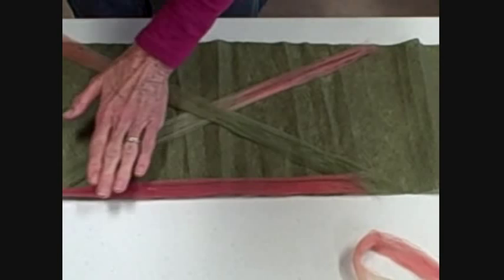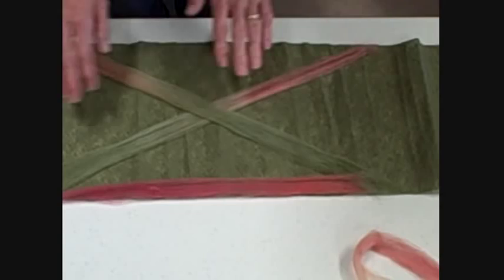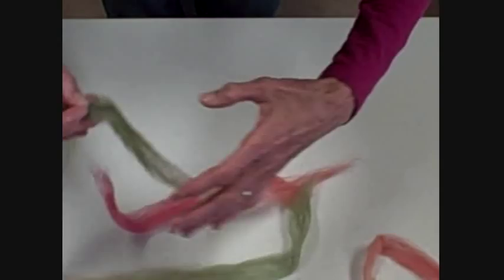You can use this on a base of prefelt like this, or you can take these pieces that we've separated and use them by themselves. You can make one of those wonderful lattice scarves where you simply lay the roving in a ladder fashion.